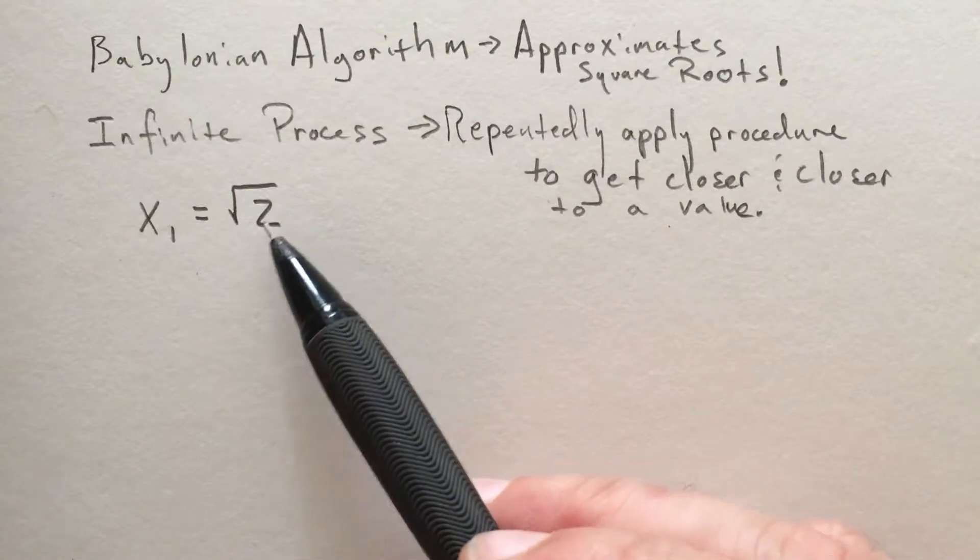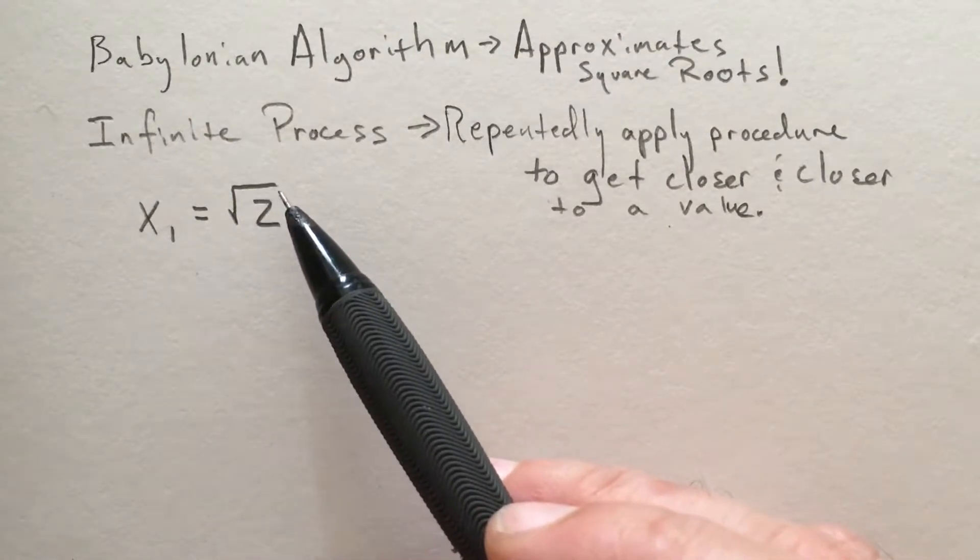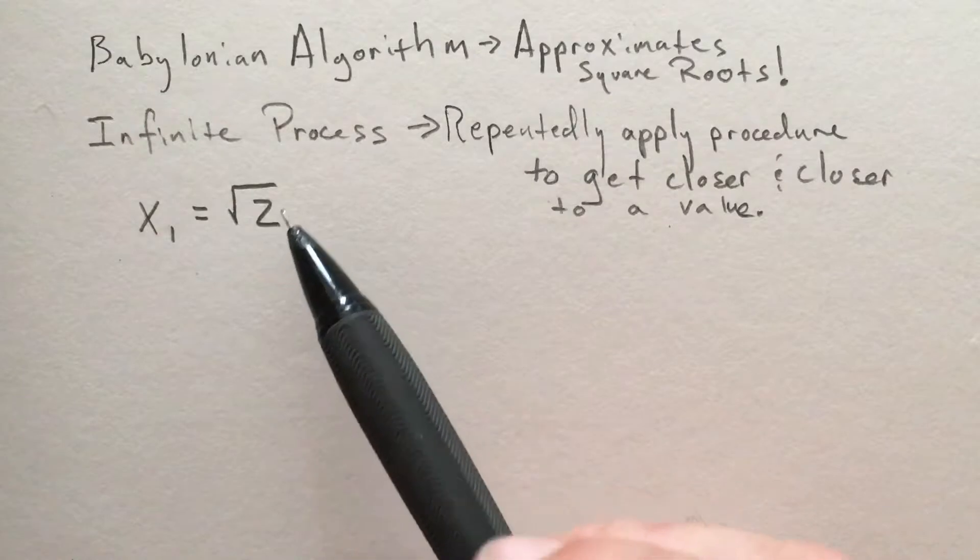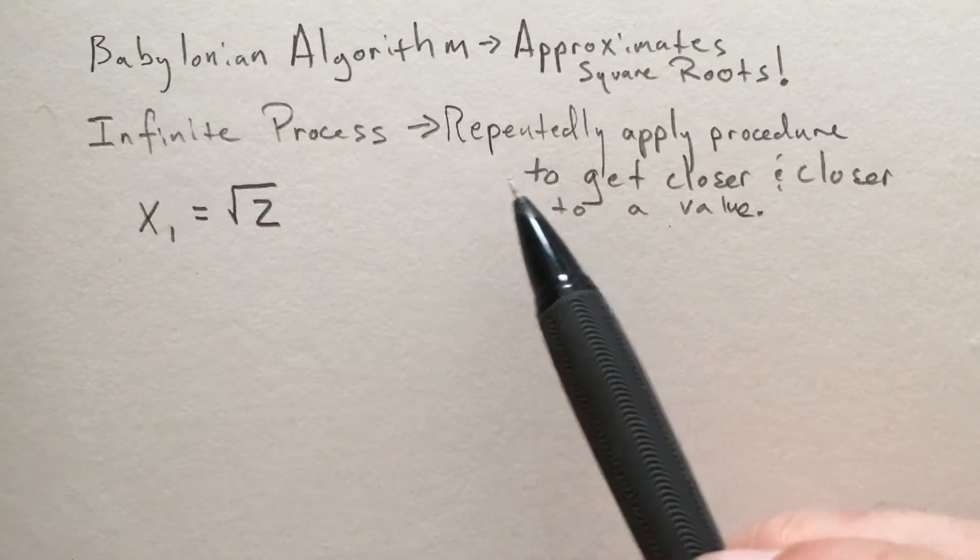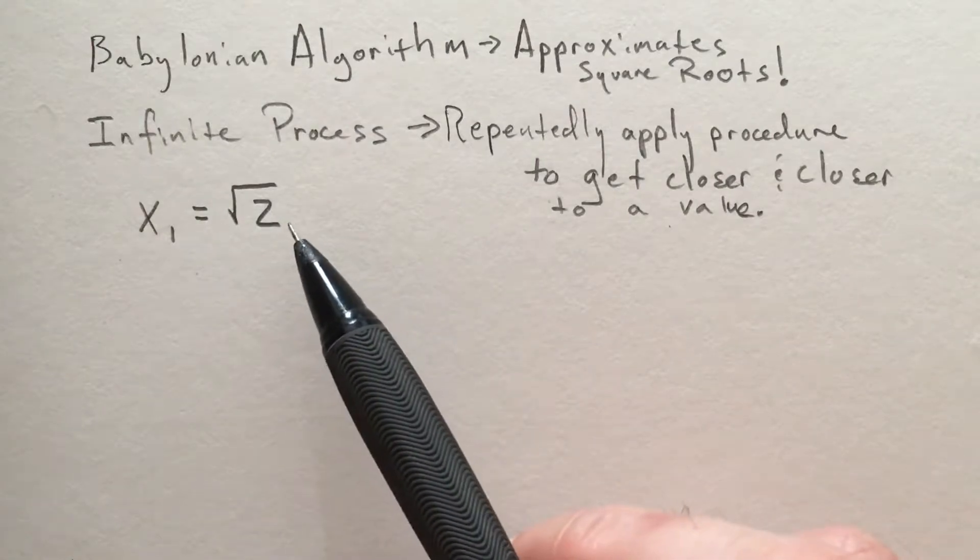However, doing so gives us insight into the larger thing we're going to see over and over again, which is this infinite process: just repeating this operation to get closer and closer to the actual value of something we're interested in.